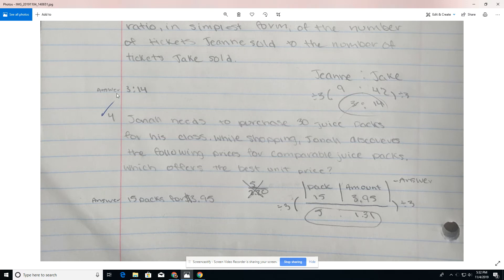Number four, Jonah needs to purchase 30 juice packs for his class while shopping. Jonah discovers the following prices for comparable juice packs, which offers the best unit price. Here it looks like this student only did one of the four options, which is fine. Look on the quiz. What we need to do is reduce every one of the four options to a common comparison. And in this case, when you look at the options, they're all multiples of five. So if we reduce all of the different answer options to, instead of 15 packs for three 95,